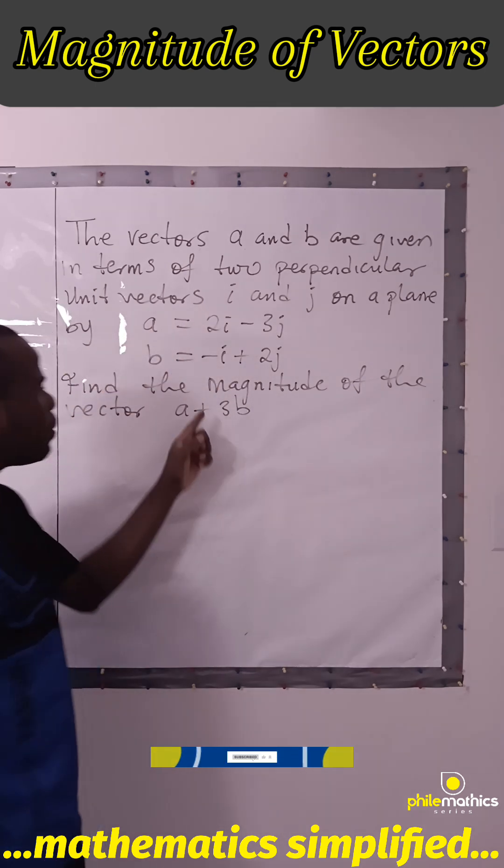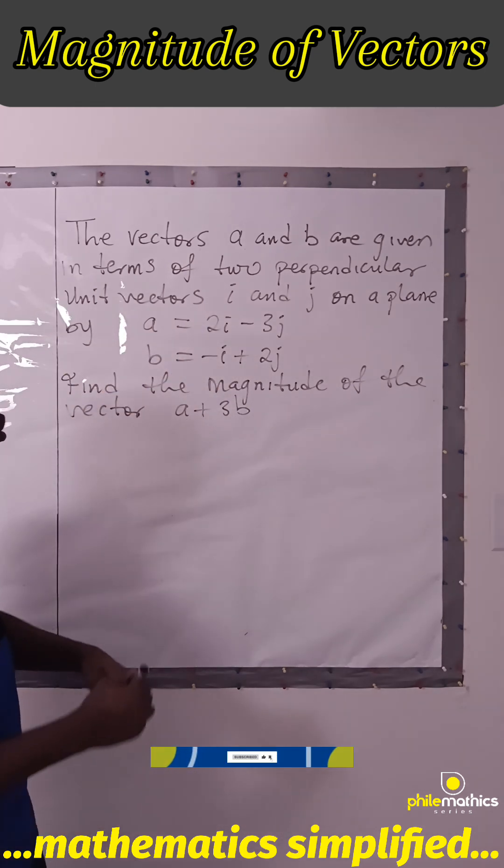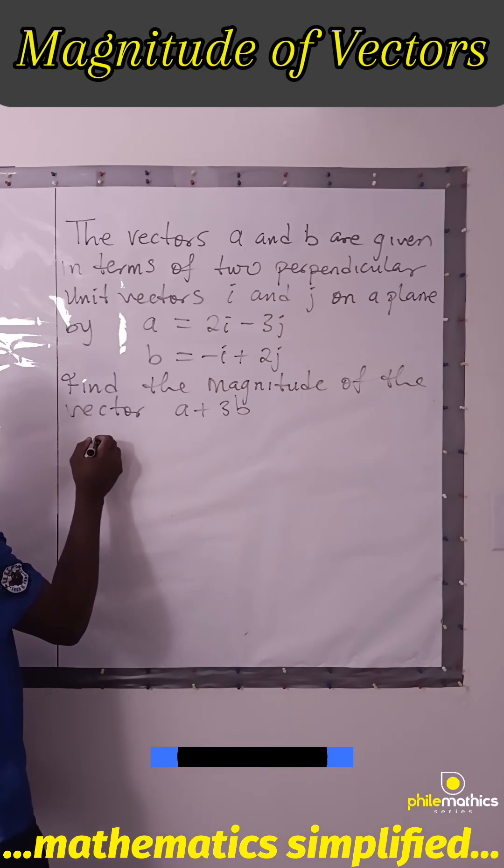We are asked to find the magnitude of the vector. For us to find the magnitude of the vector, we need to add it first.